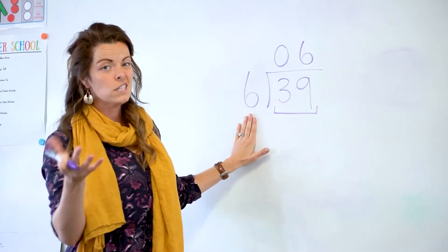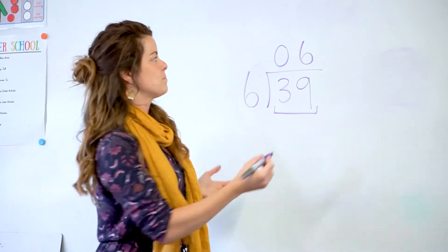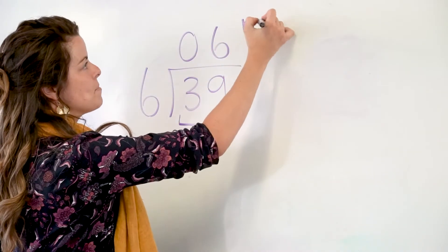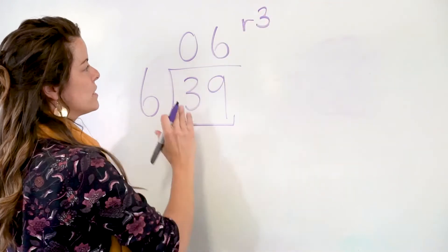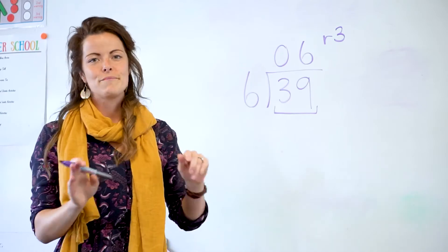And then I need to think about what's the difference between 36 and 39, and I know that's 3. So I then write a small r and a 3, because it goes in 6 times. 6 goes into 39 six times with 3 remainders.